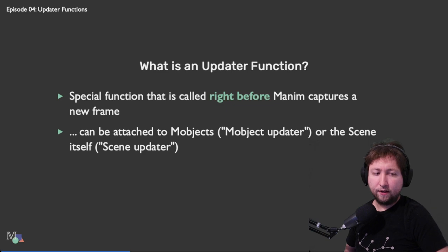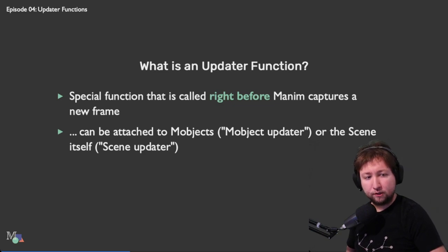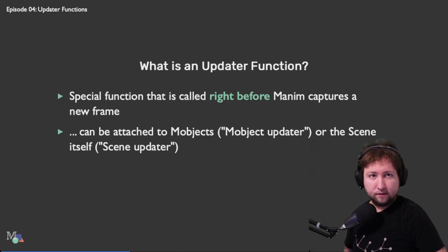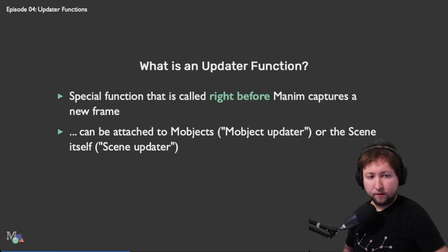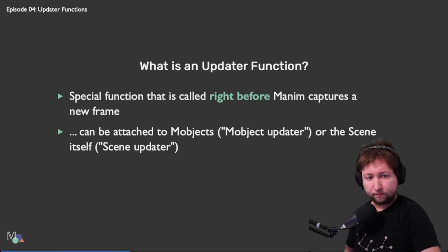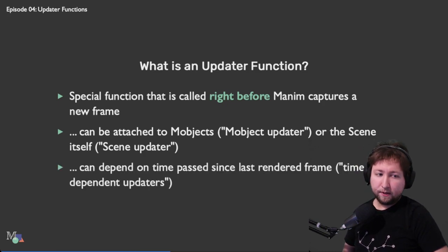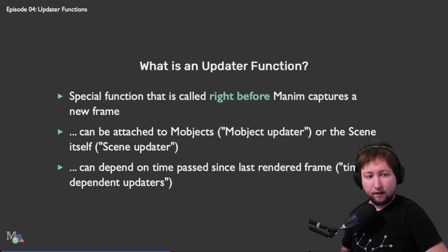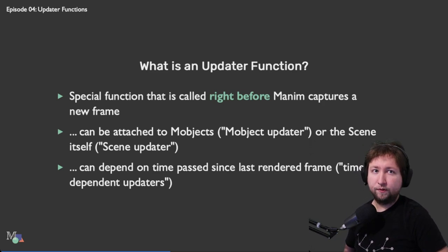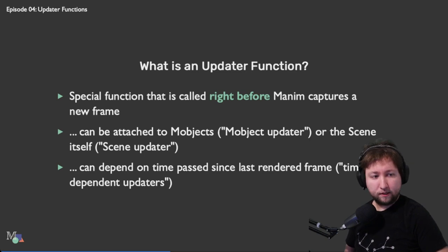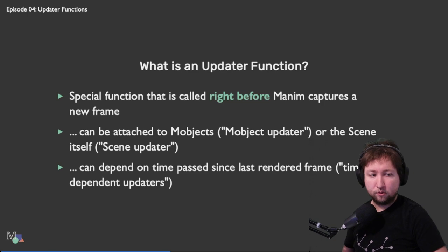Updaters can come in different flavors. On one hand, they can be attached to mobjects — which is what we call mobject updaters — or to the scene itself, although that's a lot less common, which is what we refer to as scene updaters. They can also depend on the time passed since the last rendered frame, basically one over the frame rate, which is what we call time-dependent updaters. These play a sort of special role when Manim constructs the scene.